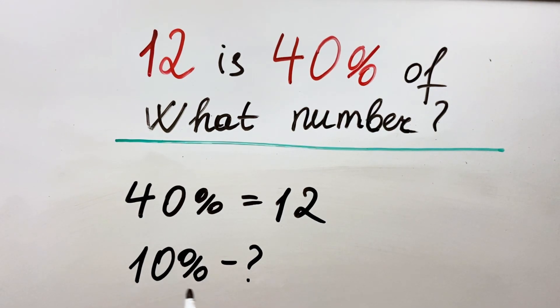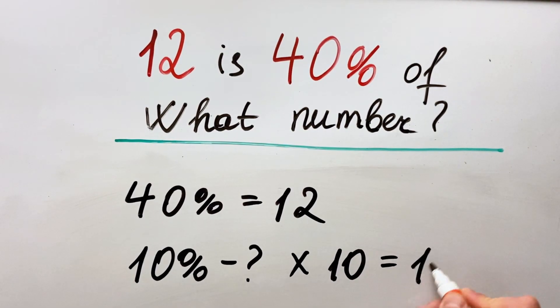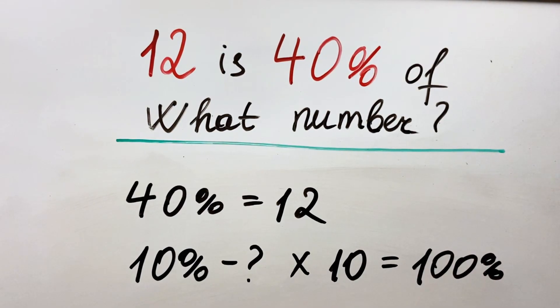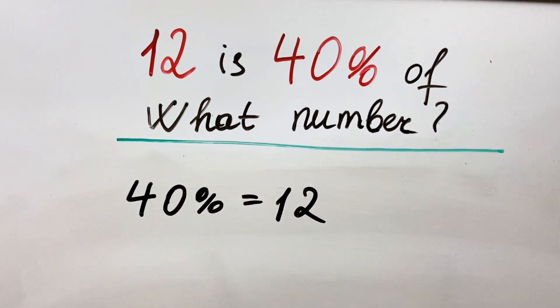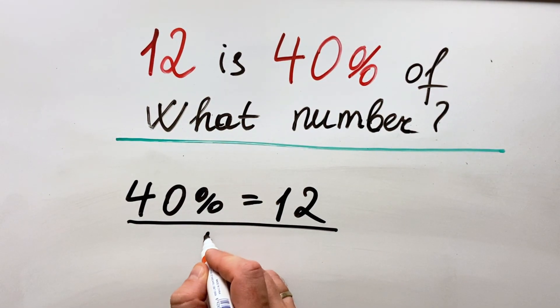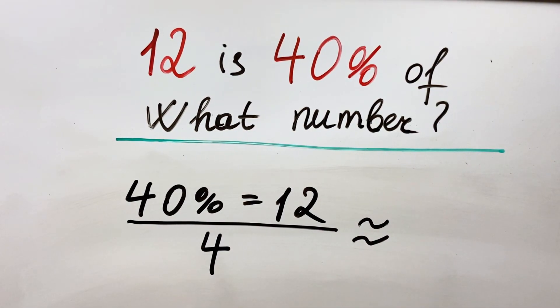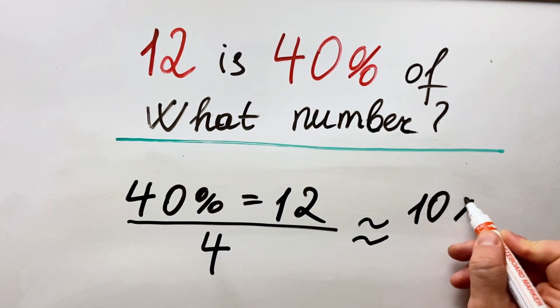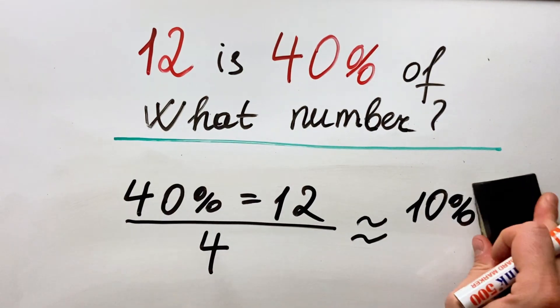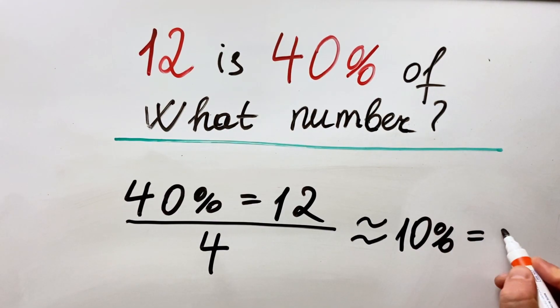Why do we need to figure out 10 percent? Because if we know 10 percent, then we just multiply by 10 and we find the 100 percent. So we need to find out the 10 percent. It's 40 percent is 12, if we divide all this by 4 to find out the 10 percent, that means that 10 percent equals to 3.